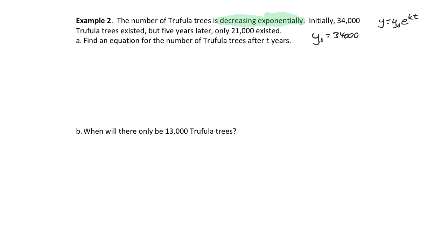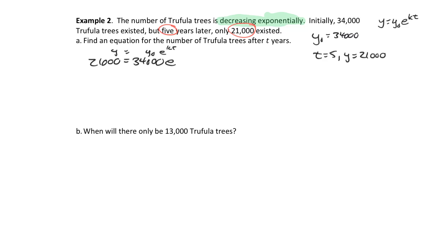After five years, 21,000 trees existed, so when t equals 5, y equals 21,000. We set up: 21,000 equals 34,000 e to the 5k. Dividing both sides by 34,000 gives 21/34 equals e to the 5k. Taking the natural log: ln(21/34) equals 5k, so k equals one-fifth of ln(21/34).